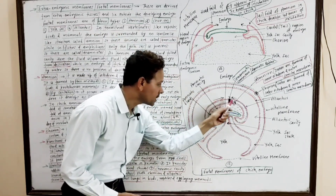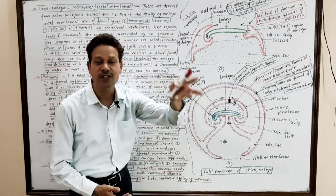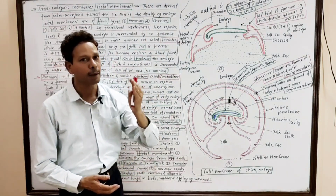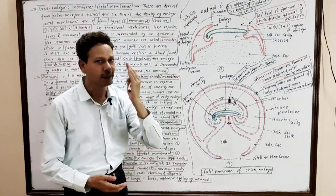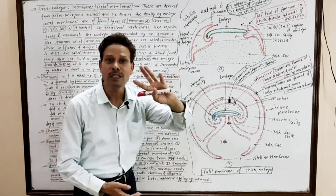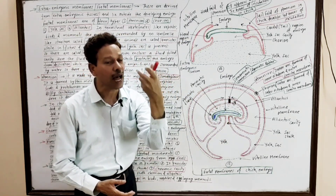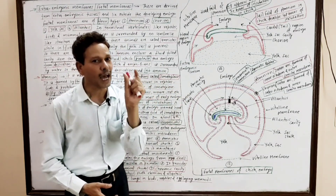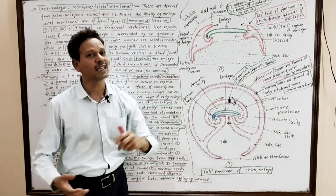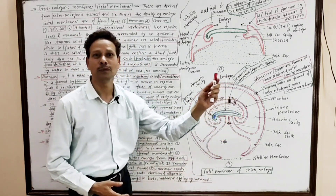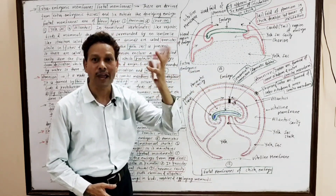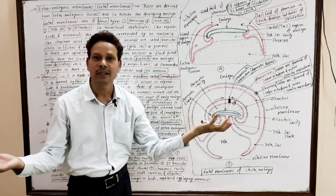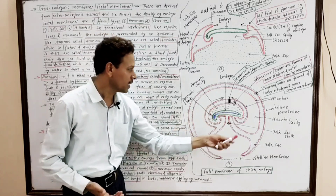Vertebrates are classified into two groups on the basis of the presence of amnion. The embryo is surrounded by an umbrella-like structure — the amnion — which is a characteristic feature of all terrestrial forms: reptiles, birds, and mammals. The amnion encloses an amniotic cavity filled with amniotic fluid, which prevents desiccation of the embryo.